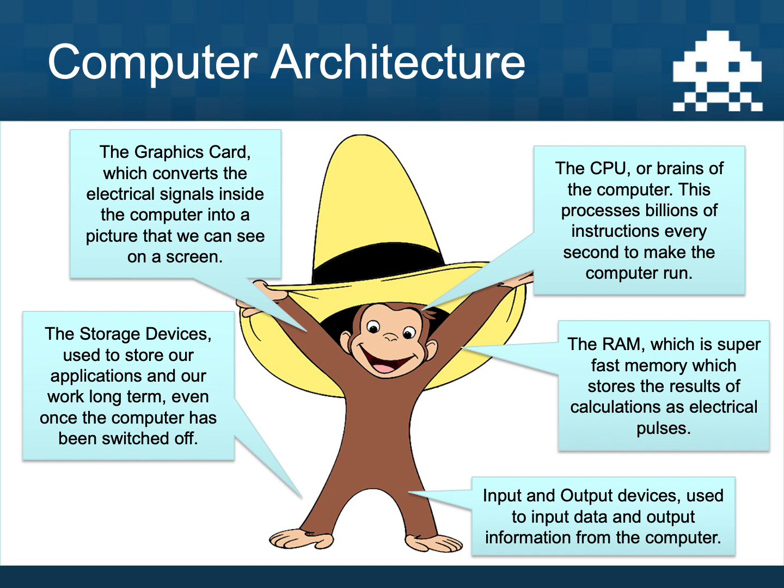The RAM memory was Archie's arm. RAM is super fast memory which stores the results of all the calculations going on inside the CPU. It stores those as electrical pulses, so it only works while the computer is switched on — when the computer is switched off, the RAM memory is wiped.